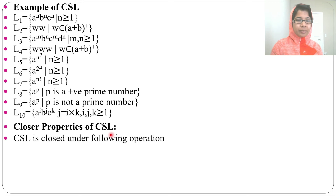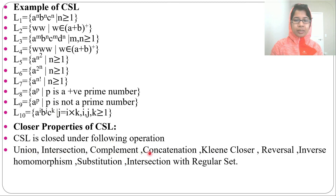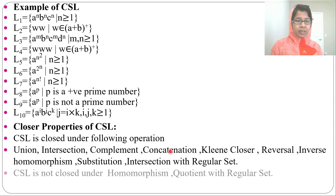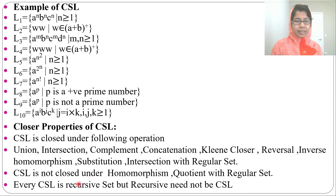Next, the closure properties of context-sensitive language. Context-sensitive language is closed under: union, intersection, complement, concatenation, Kleene closure, reversal, inverse homomorphism, substitution, and intersection with regular set. Note that every language is closed under intersection with regular set. Context-sensitive language is not closed under homomorphism or quotient with regular set. Every context-sensitive language is recursive, but a recursive language need not be context-sensitive — context-sensitive language is a proper subset of recursive languages.